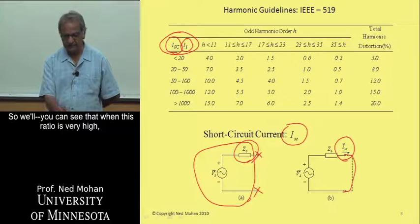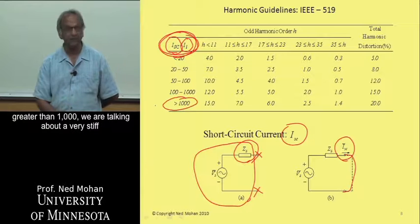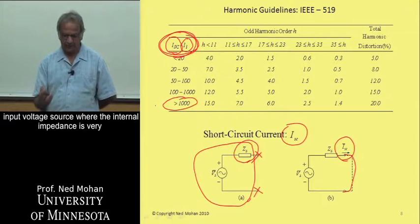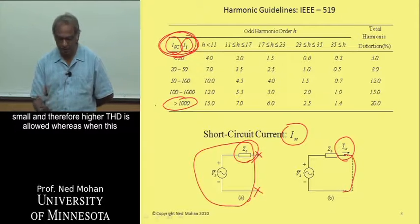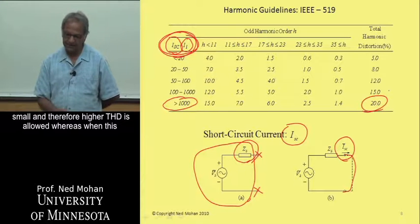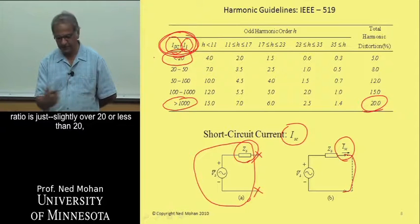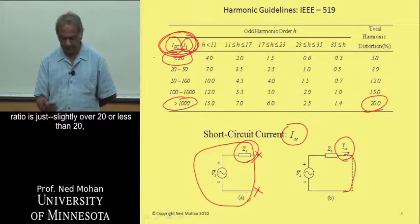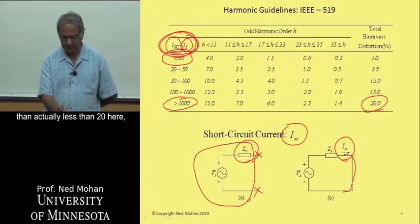So you can see that when this ratio is very high, greater than 1,000, we are talking about a very stiff input voltage source where the internal impedance is very small and therefore higher THD is allowed.